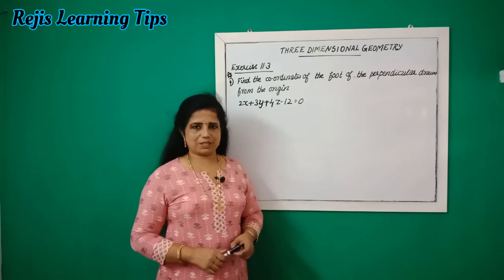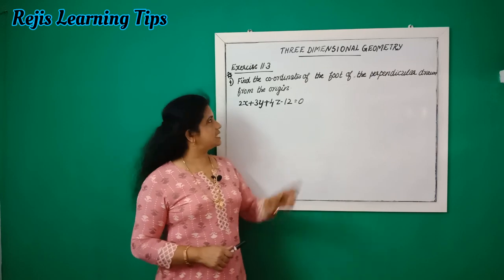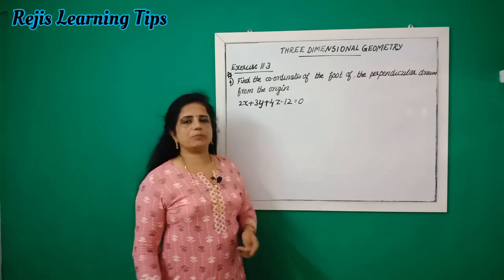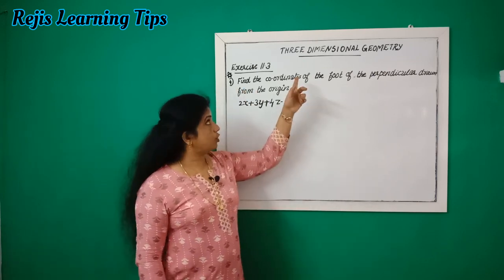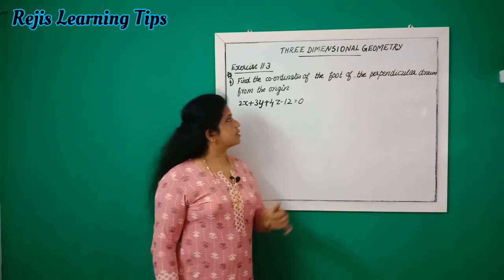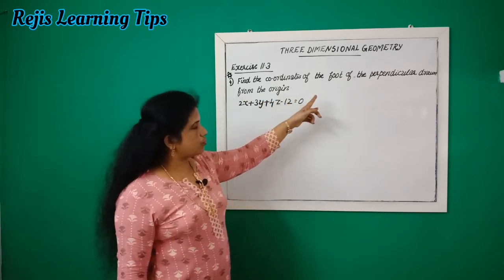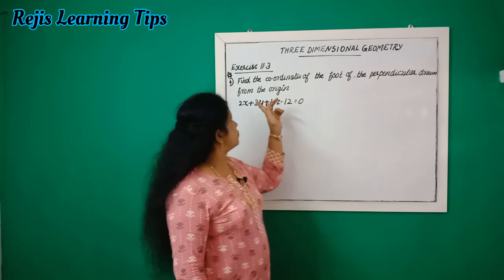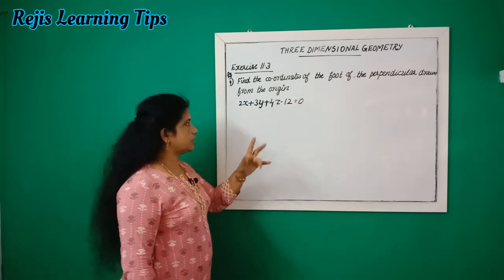Hi everyone, welcome back. Today we are going to discuss the fourth question from Exercise 11.3 of three-dimensional geometry. Find the coordinate of the foot of the perpendicular drawn from the origin to the plane.